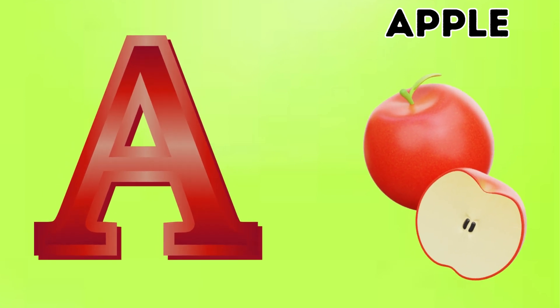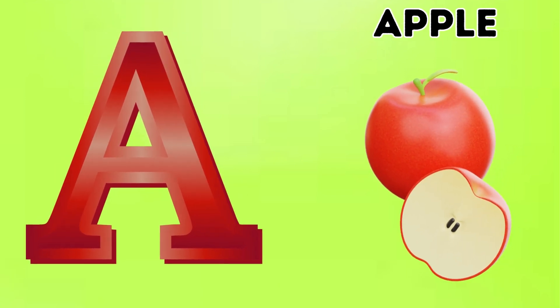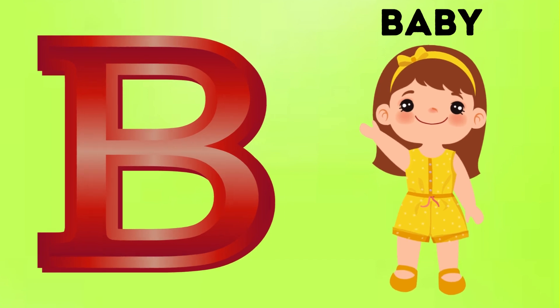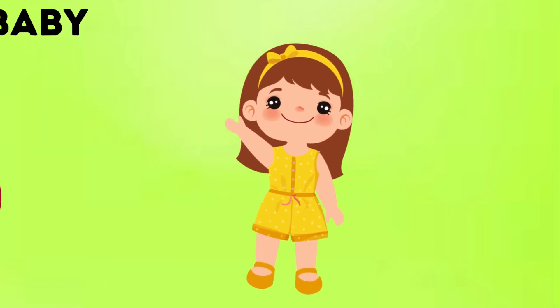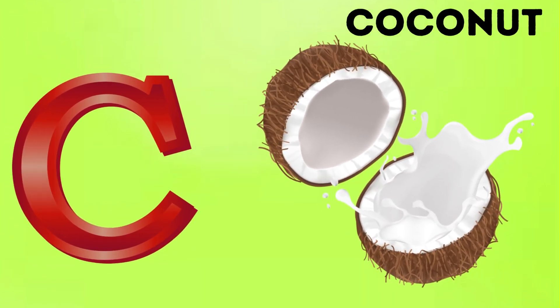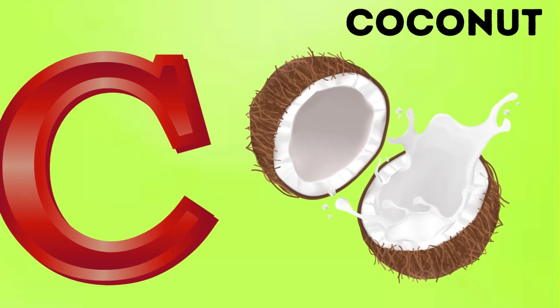A is for Apple. A, A. Apple. B is for Baby. Ba, Ba. Baby. C is for Coconut. Ga, Ga.